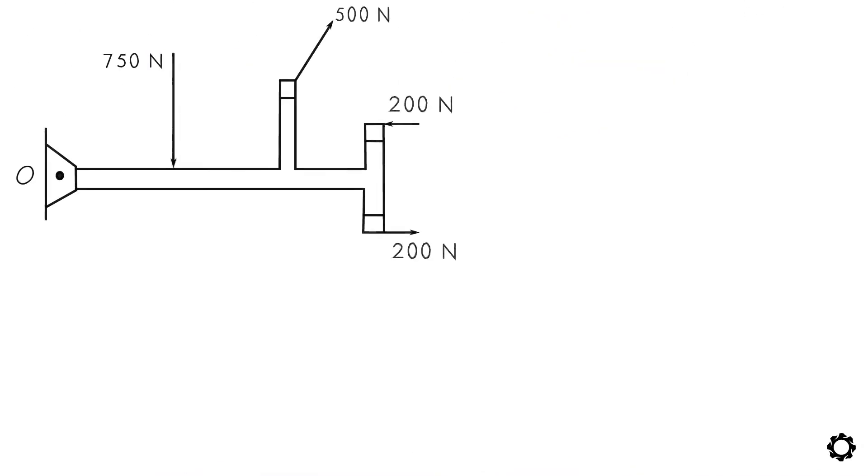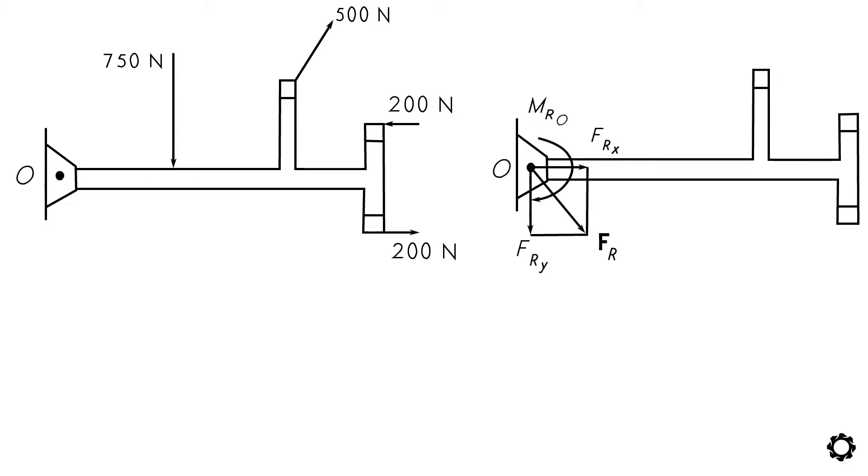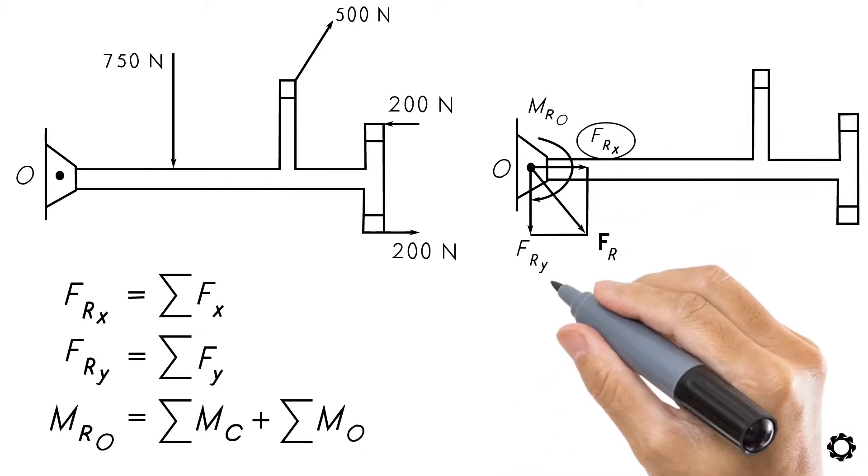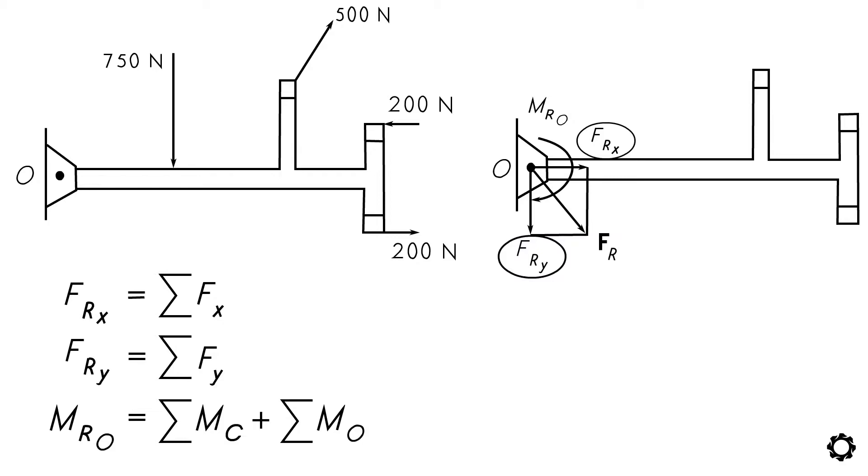In a two-dimensional case, we can reduce the set of equations to the following scalar equations. Note that after you have solved the separate components FRx and FRy from their equations, the resultant force FR can be determined by using addition between these components.